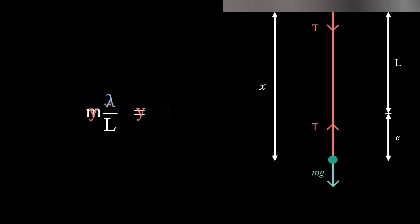So we'll rearrange to get the y terms all on one side. And then if we divide through by m, we see that we are left with this expression. Finally, let's make a substitution. Let's say that omega squared is lambda over m times L. After substituting this back in, we actually are left with the equation for simple harmonic motion.